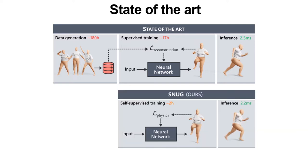In contrast, we propose a new training scheme that removes the need for ground truth samples, enabling self-supervised training of dynamic 3D garment deformations. Key to our success is a new physics-based loss term that describes how cloth dynamically deforms. This term is directly borrowed from physics-based simulation methods, which typically solve dynamics by applying a numerical integration scheme to the equations of motion.